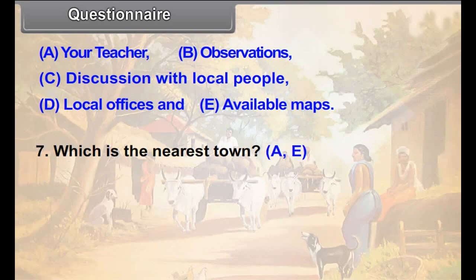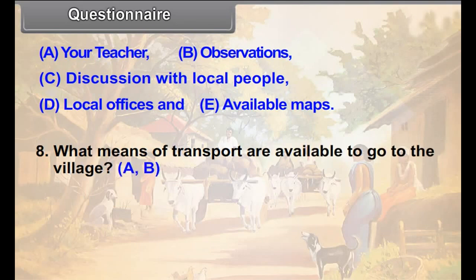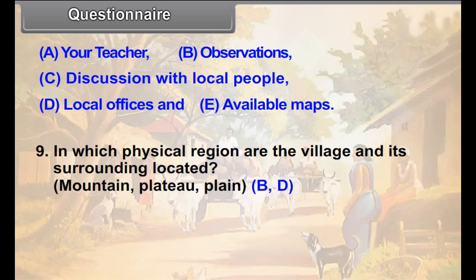Question 7: Which is the nearest town? Question 8: What means of transport are available to go to the village? Question 9: In which physical region are the village and its surroundings located — Mountain, Plateau, or Plain?